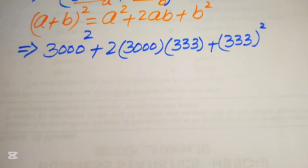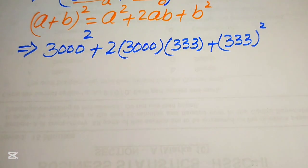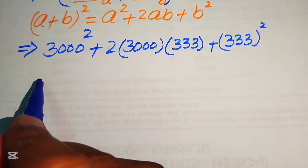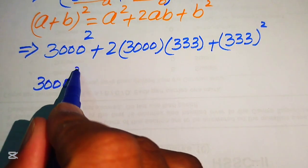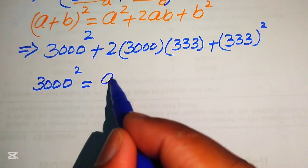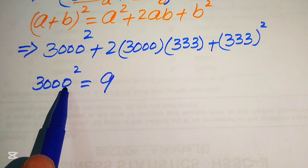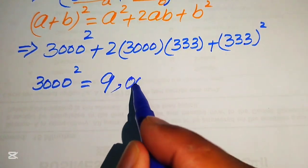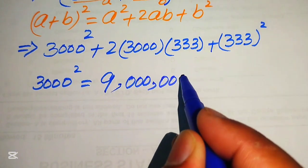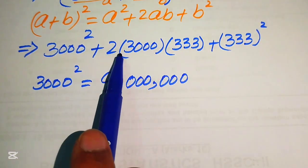We find each of the three terms separately. For 3000 squared: we take 3 squared equals 9, and squaring the three zeros doubles them to six zeros, giving us 9,000,000.